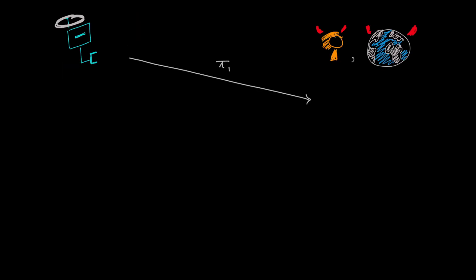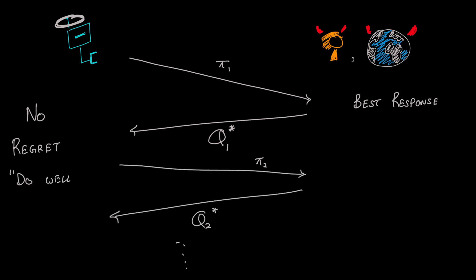One strategy to play the game is that in every round, the value function player plays best response, that is, returns the most discriminative value function. While the robot policy plays no-regret, that is, a policy that does well on all the value functions it has seen thus far. This combination of strategies guides the players to an approximate equilibrium and achieves the goal.